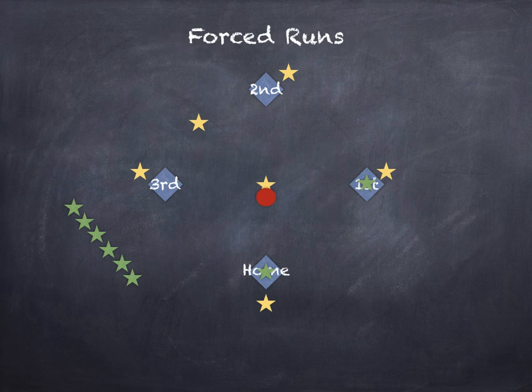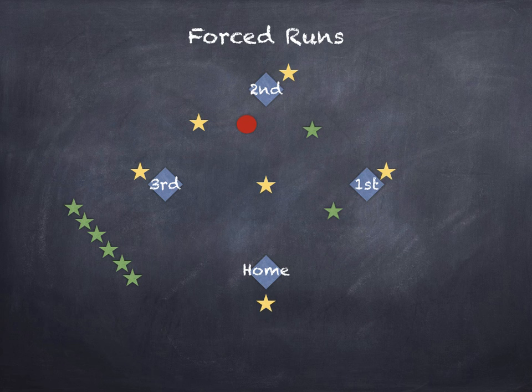Next up is force runs — this is a little tricky, but you'll get the hang of it. Sometimes you have to run even if the ball is kicked right to the base you're supposed to run to and you know you're going to be out. In this situation, there's a person about to kick, and somebody's already on first base. When that person kicks the ball, even if the ball goes close to second base, you still have to run because the kicker is trying to get to first base and they can't if you're standing on it. If there's somebody behind you, you have to run.